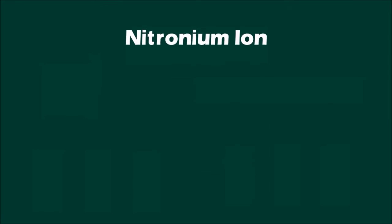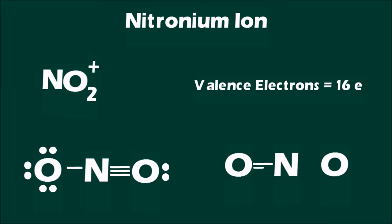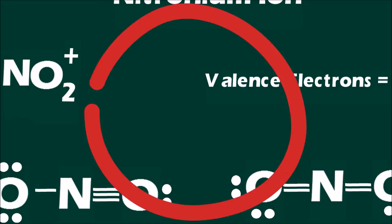How do we know that we are drawing the correct structure? This nitronium cation has two Lewis structures. Both structures seem correct. The octets of the individual atoms are satisfied in each case. However, only one of these Lewis structures is accurate. We need to assign formal charge to each atom to determine the true Lewis structure for nitronium.